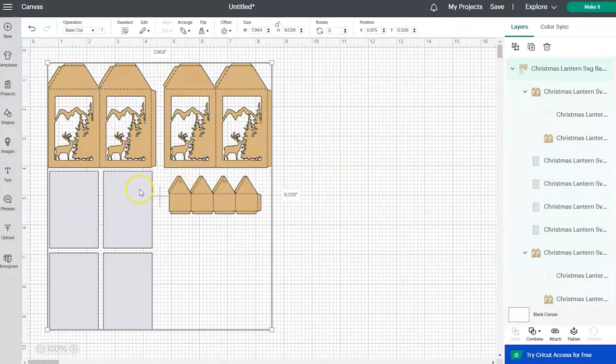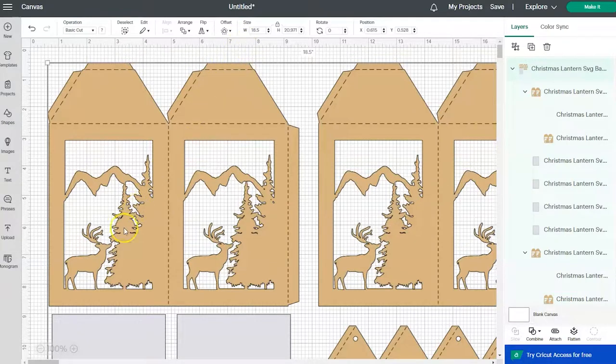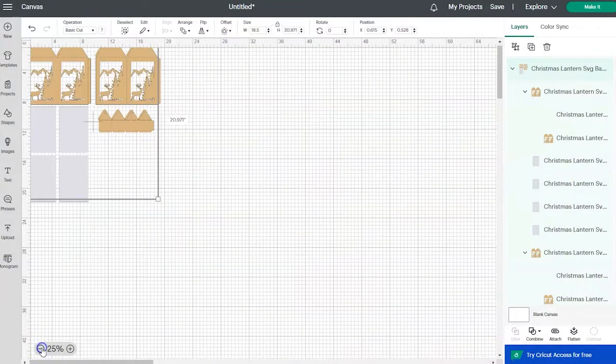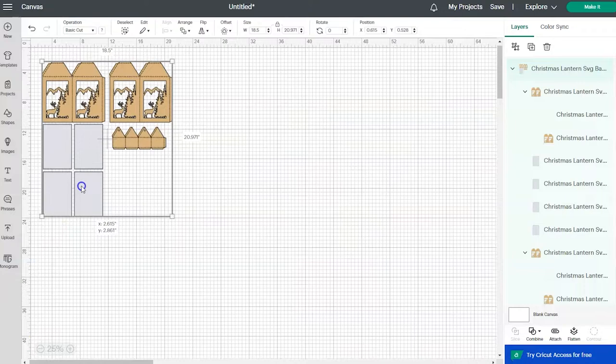So this is what the design will look like when you first import it onto your canvas screen. The first thing that we're going to do is resize everything so that it will work with our project. And we're going to change the width to 18.5 inches. So I'm going to go up here and I'm going to close the lock and then just put in 18.5 for the width.